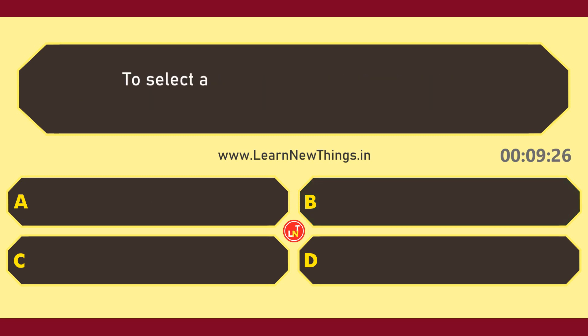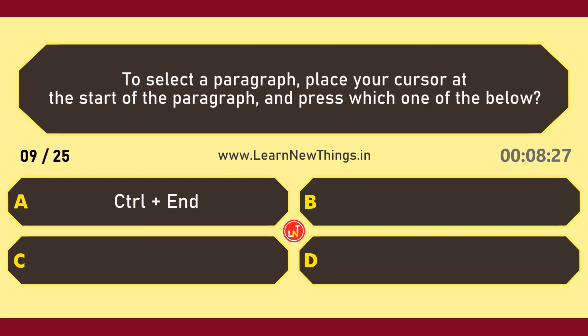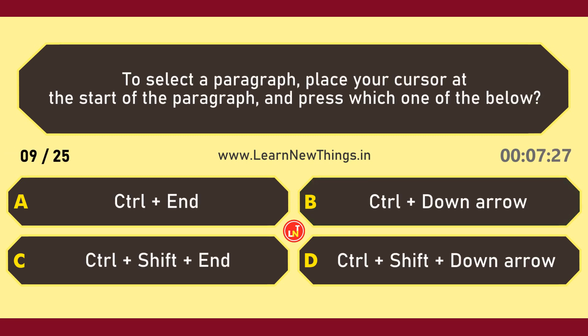To select a paragraph, place your cursor at the start of the paragraph and press which one of the below? Ctrl+Shift+Down Arrow.